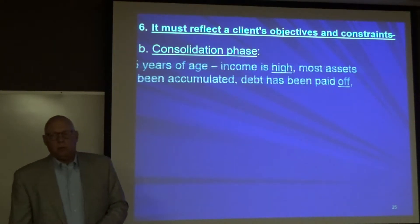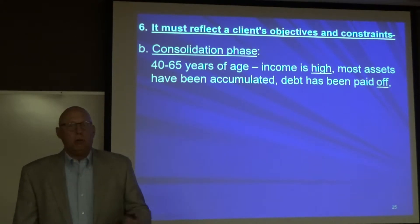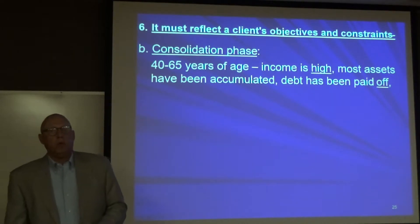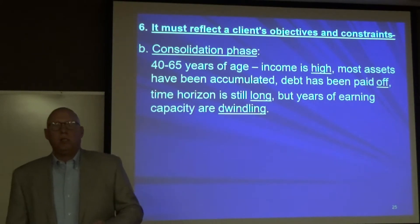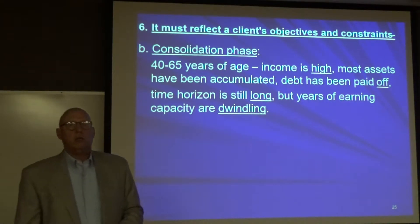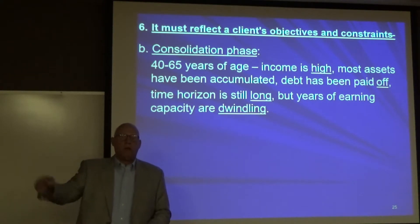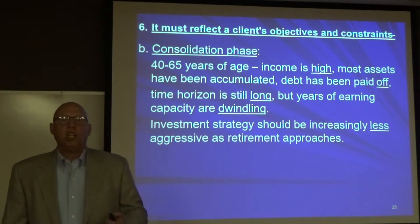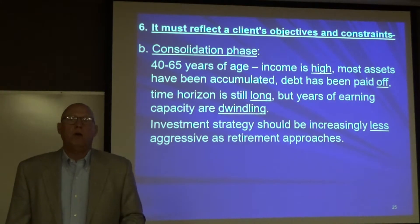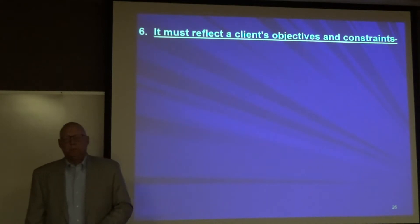Then you enter the consolidation phase — ages 40 through 65. This is the sweet spot. Your income is high, most of your assets have been accumulated, and most of your debt, hopefully, has been paid off. Your time horizon is still long, but the years of earnings capacity are starting to dwindle. As you approach age 60 to 65, your investment strategy should become increasingly less aggressive as retirement approaches. You're starting to move from capital appreciation to income and preservation — adding more bonds and subtracting stocks.